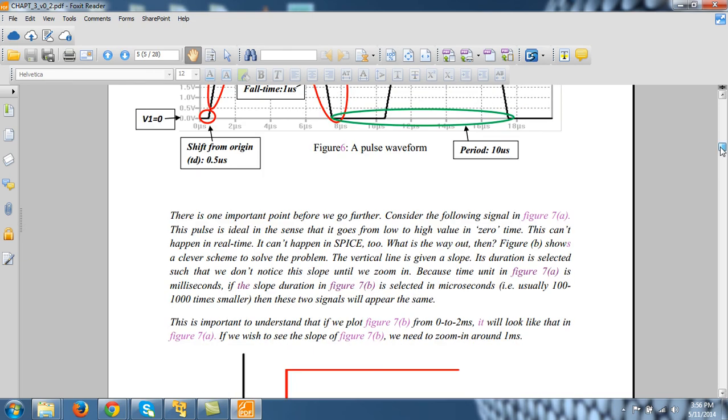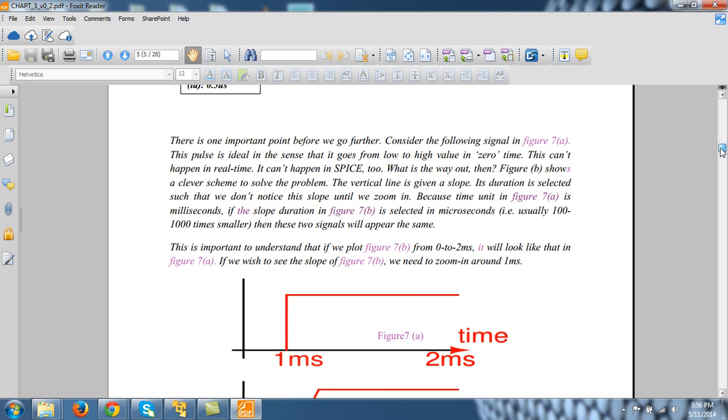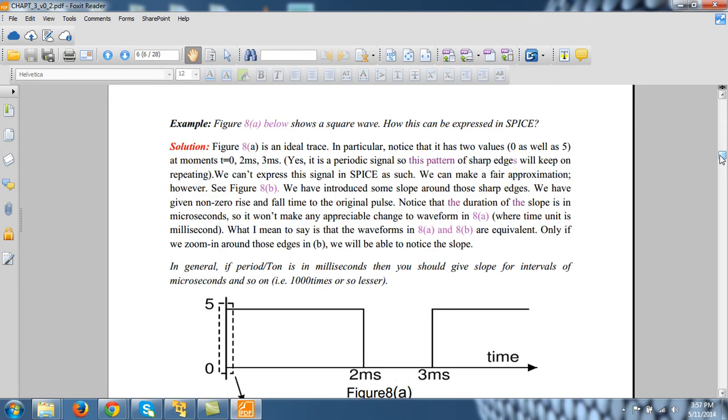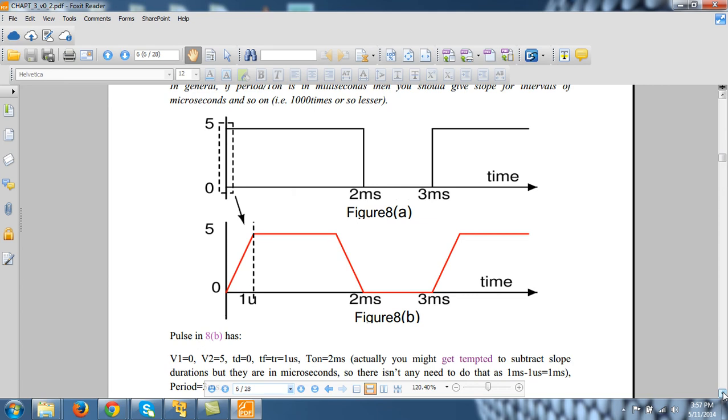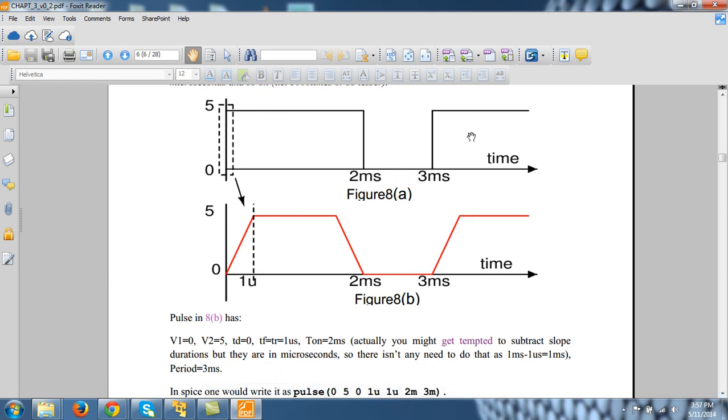Let us see how we can represent a pulse source using this pulse command of SPICE. Suppose this is the periodic square waveform that we want to represent in SPICE. We can use the pulse to represent this kind of waveform.